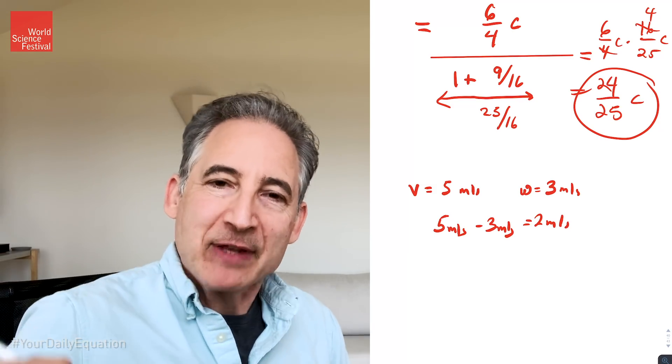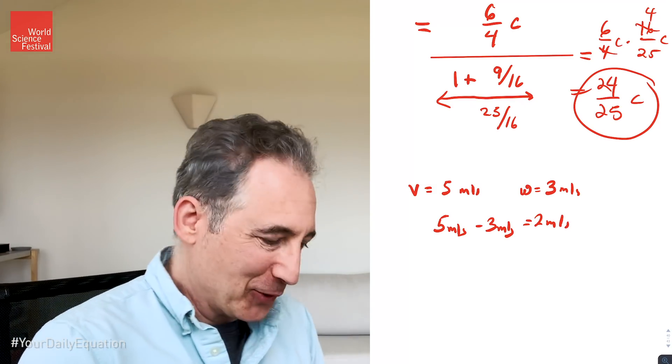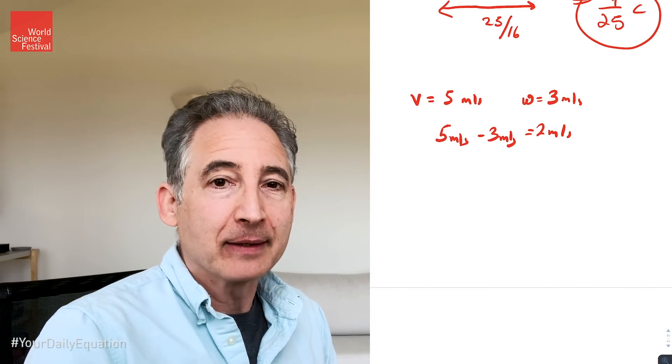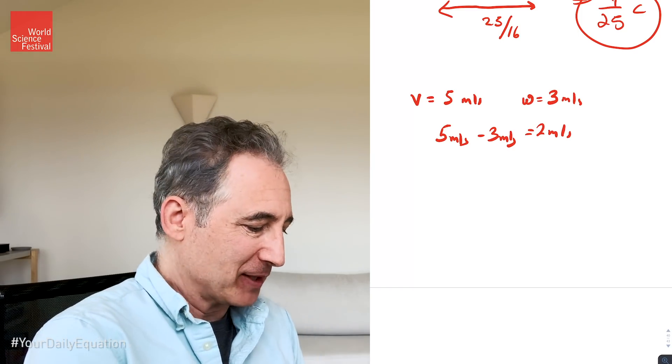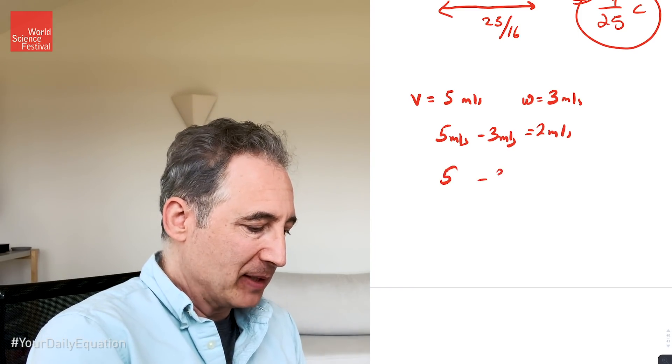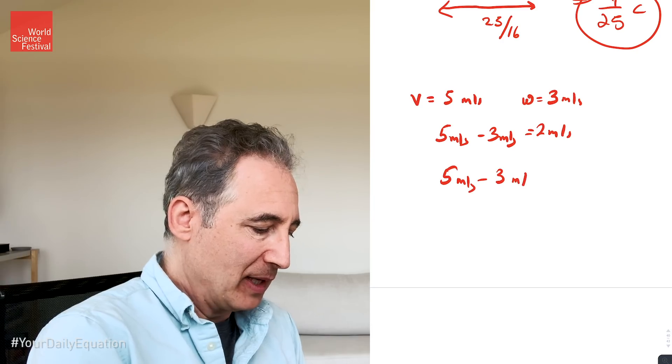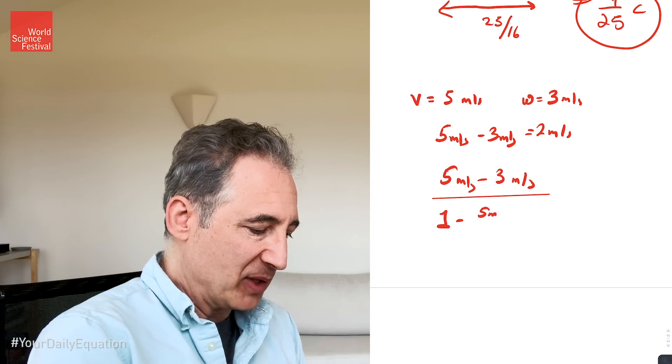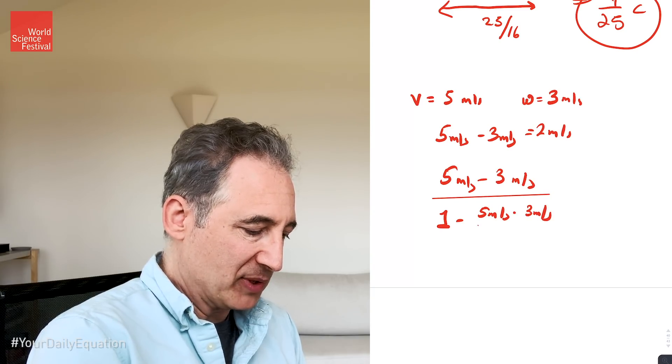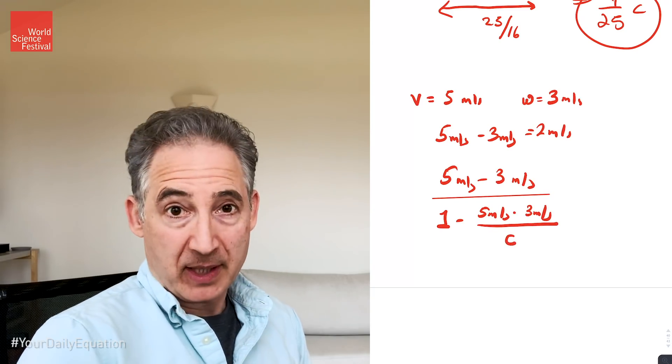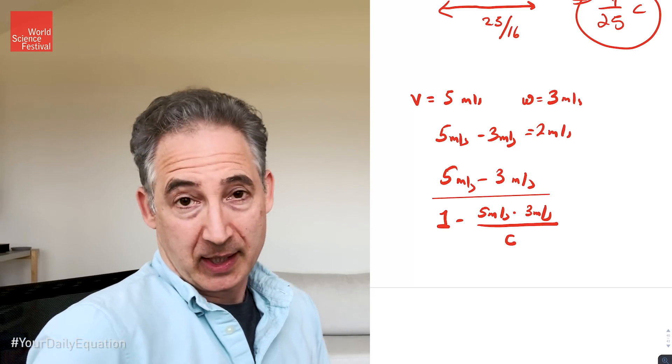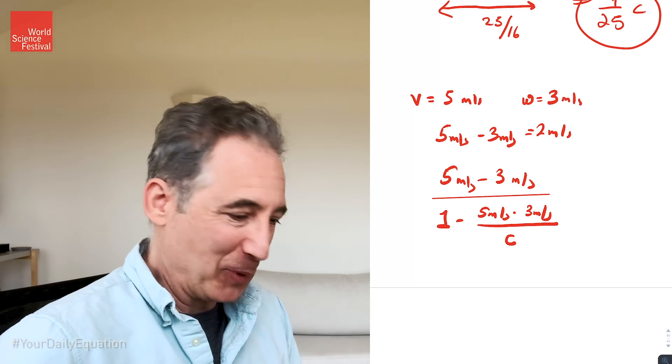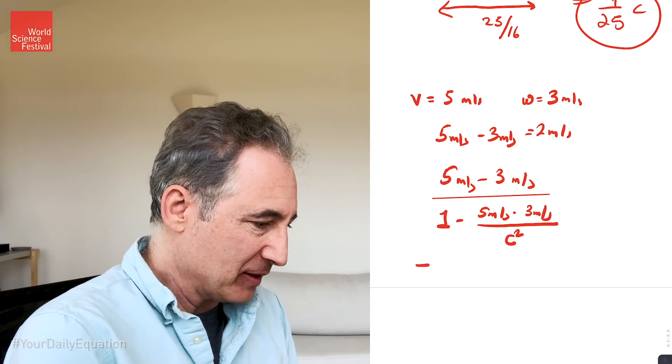But Einstein's telling us, even in everyday life, you need to include this correction. So what is the actual speed of the approaching egg from Gracie's perspective? Well you do 5 minus 3 meters per second upstairs, but now you must divide by 1 minus 5 meters per second times 3 meters per second divided by the speed of light squared, which in meters per second is a nice big number, 3 times 10^8 meters per second.